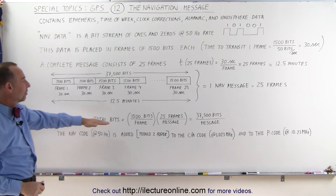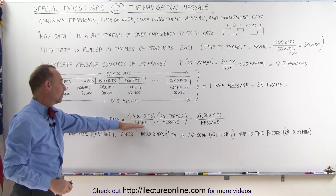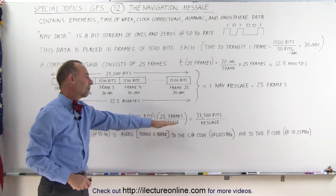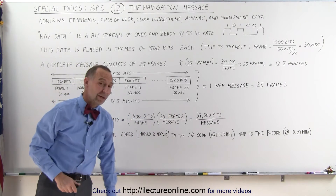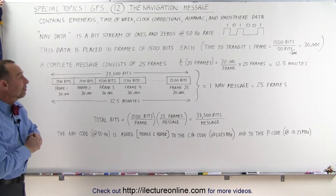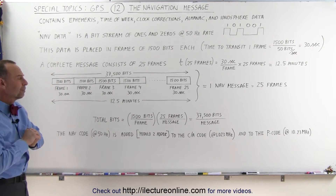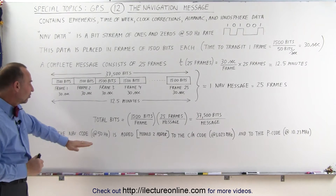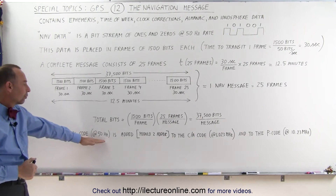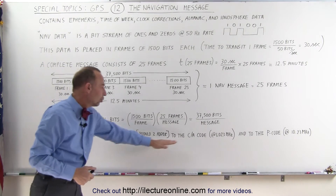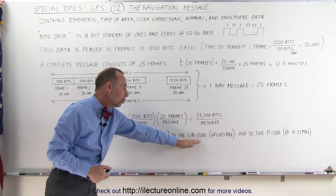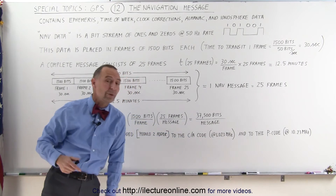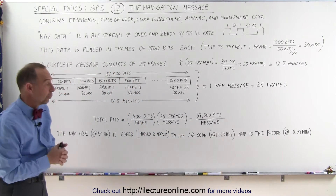So the total number of bits: 1500 bits per frame, 25 frames per message — one message contains 37,500 bits. The navigation message, which is at 50 hertz frequency, is then added to the CA code, which is at a 1.023 megahertz rate.